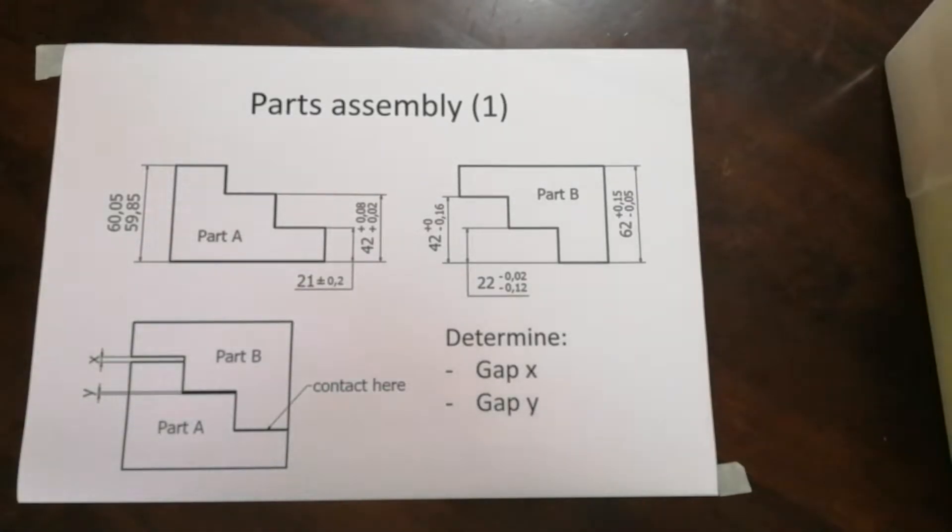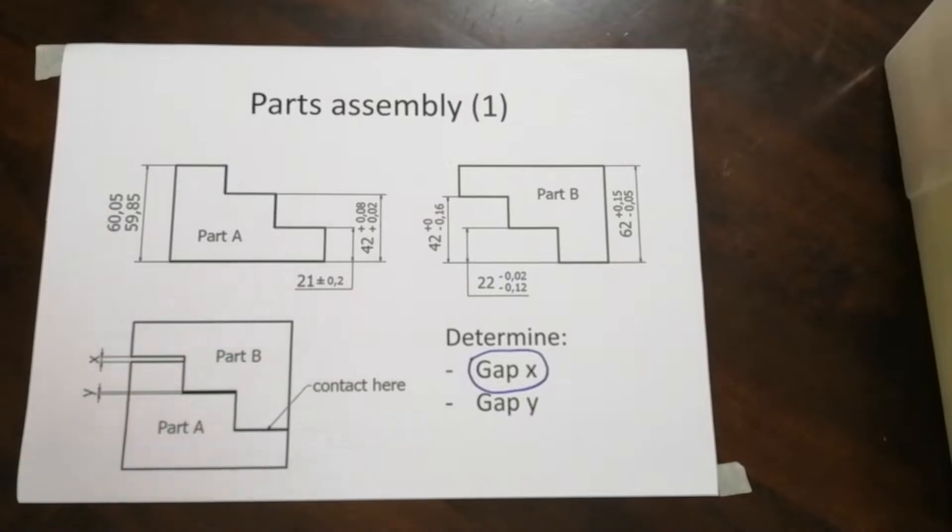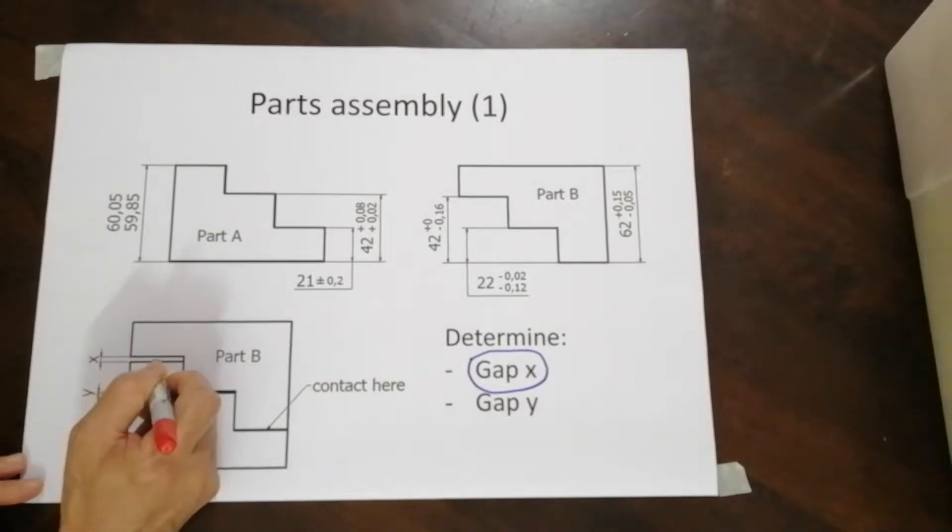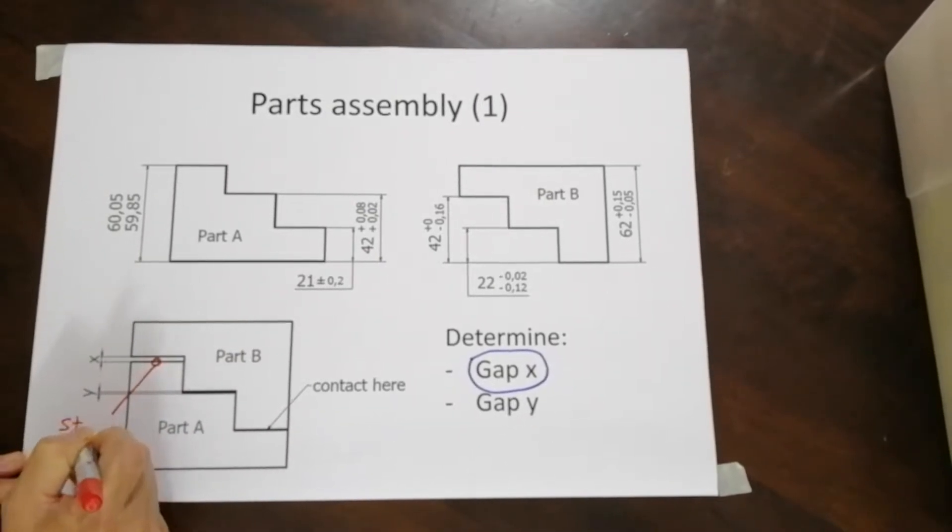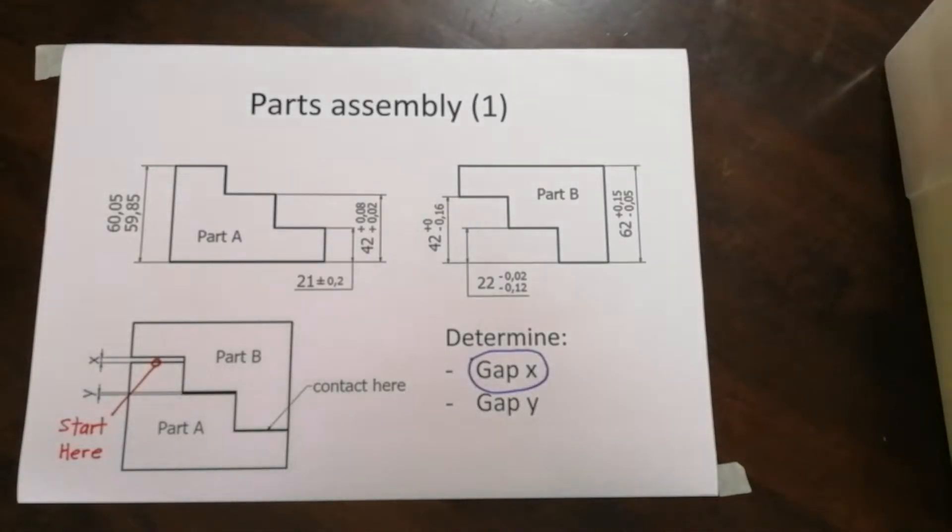Now, let me just try it on gap X, just X only. To get to gap X, we must first have a proper start point. So for the gap, the start point will always be here. Always start at the low end of the gap, or if it's a horizontal dimension, start it from the left towards the right.